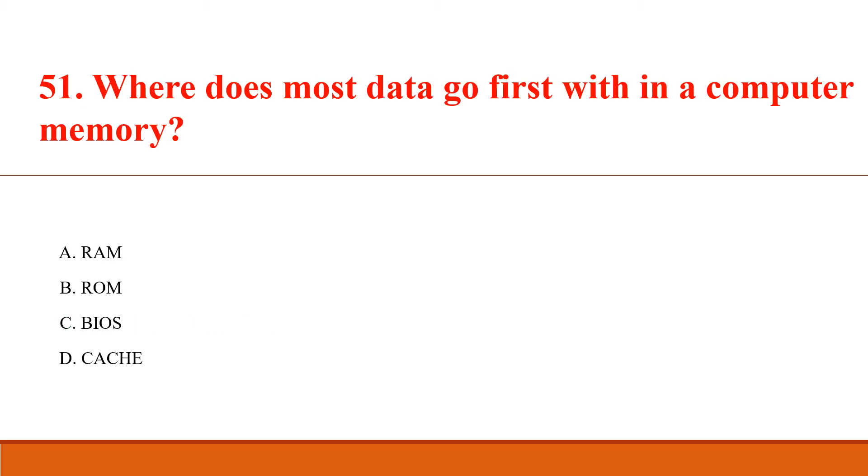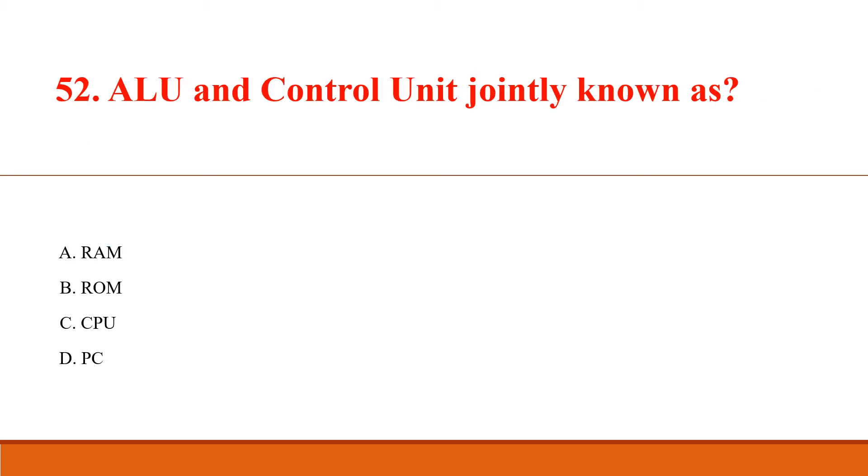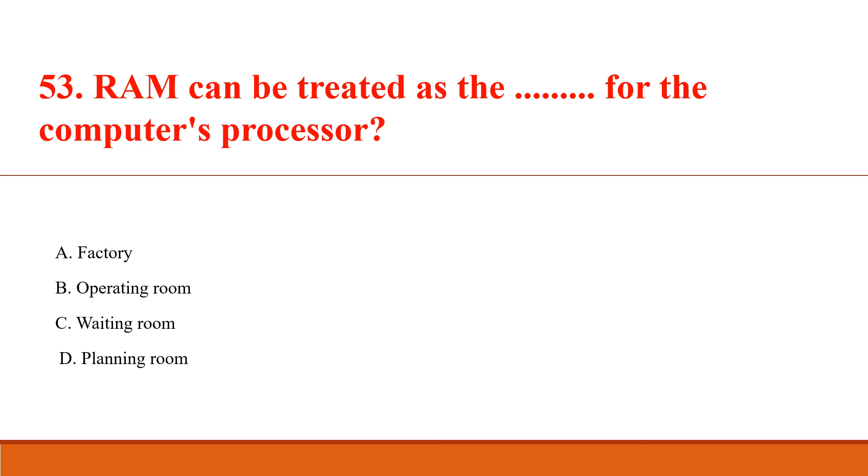Where does most data go first within a computer memory? Answer Option A: RAM. ALU and control unit jointly known as? Answer Option C: CPU. RAM can be treated as the waiting room for the computer processor. Answer Option C: Waiting room.